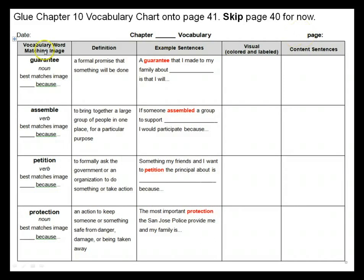Here are your four new vocabulary words — say them with me when I point to you. Guarantee — it's a noun, it's a thing. Assemble — it's a verb, it's an action. Petition — also a verb, it's an action. And lastly, protection — a noun. Here are your definitions.